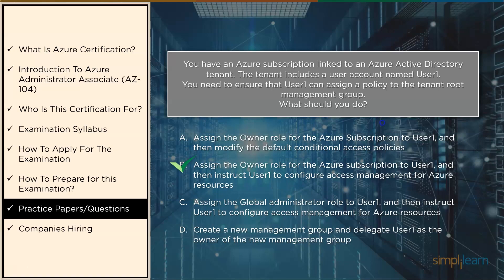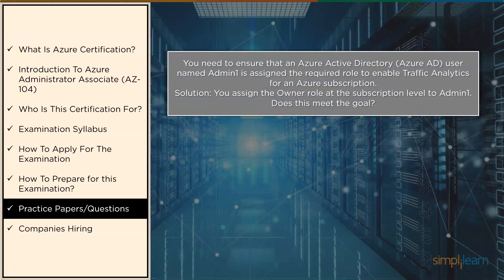The fourth question: you need to ensure that an Azure Active Directory user named admin1 is assigned the required role to enable traffic analytics for an Azure subscription. The solution is: you assign the owner role at the subscription level to admin1. Does this meet the goal? The correct answer is yes. Your account must have one of the following Azure roles at the subscription scope: owner, contributor, reader, or network contributor.